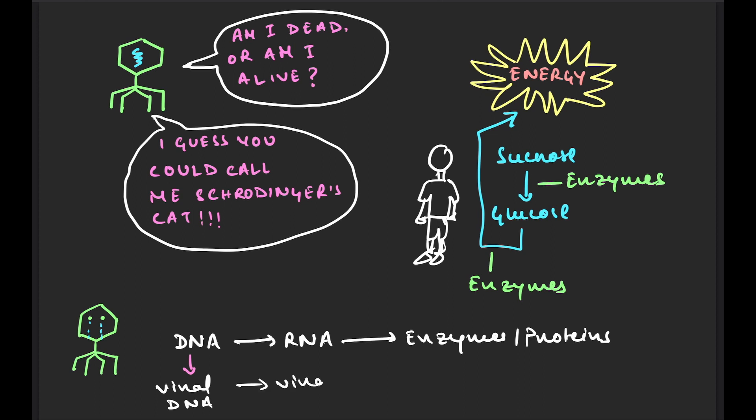Now, using these enzymes, it can replicate and spread across the body and therefore not just live but also thrive. And hence, it becomes alive whereas earlier it was dead, and therefore it is said to be borderline between living and non-living.